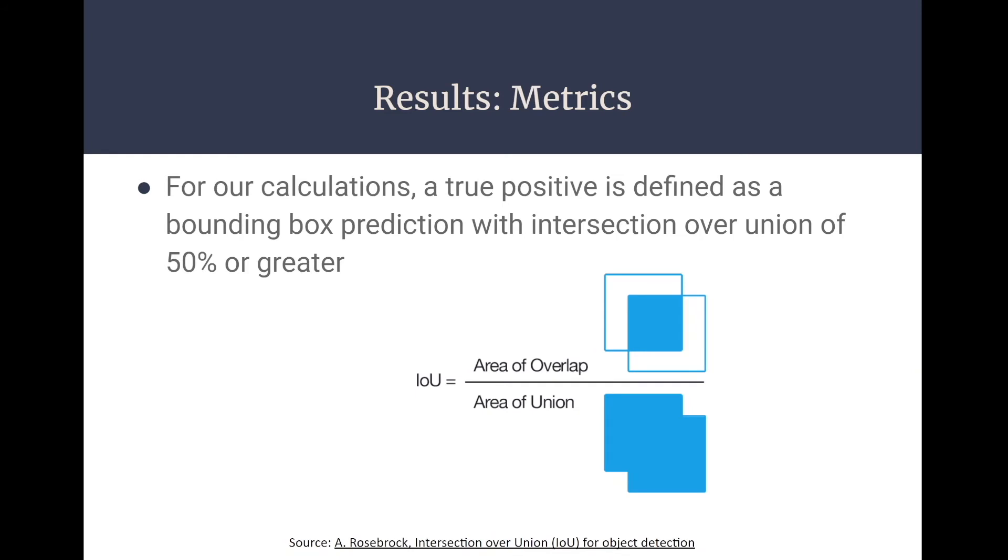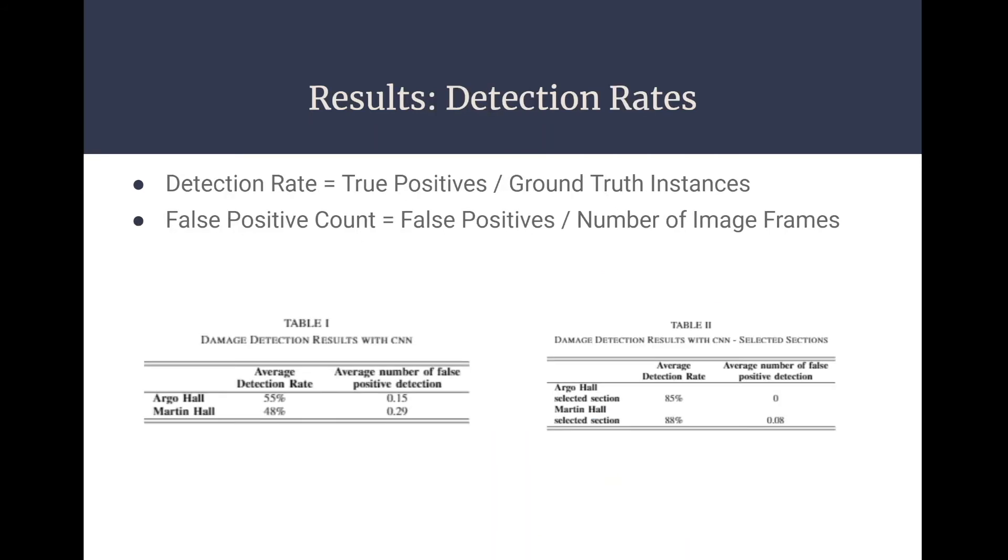For our calculations, a true positive is defined as a bounding box prediction with intersection over union of 50% or greater. In the analysis, the true positive rate and false negative detection from model predictions on 94 sample video frames from two videos were recorded. These frames were sampled using even space-time intervals. Our prediction is deemed a true positive if the bounded area contains at least 50% of the ground truth area for that damage.